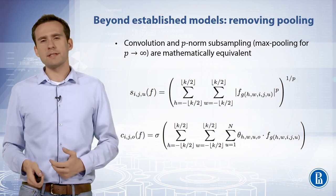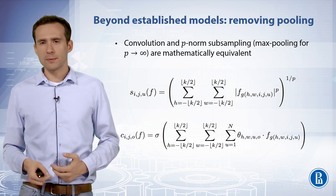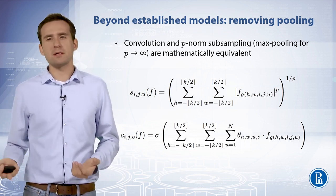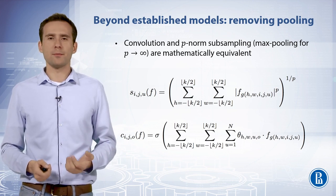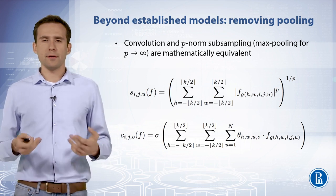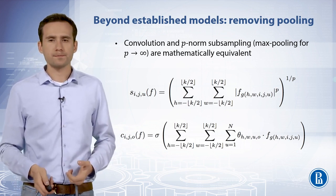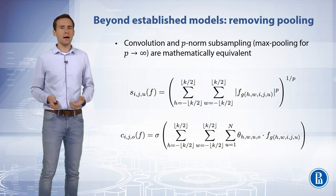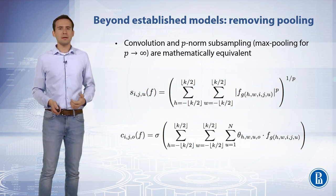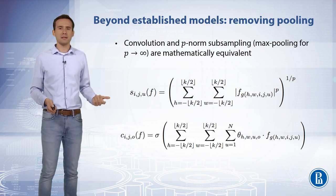If we look at the mathematical expressions for convolution and p-norm subsampling — which is effectively max pooling for p equal to infinity — we will see that their mathematical expressions are effectively equivalent. One can therefore ask the question whether any special layers such as max pooling really need to be introduced into the network in the first place.